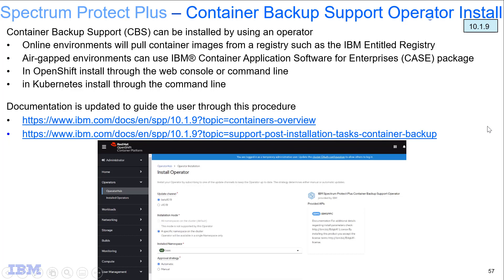Welcome to this demo of IBM Spectrum Protect Plus container backup support via an operator install for Kubernetes and OpenShift environments. Previously, the container backup support install was only supported from the command line or developer Helm view. Now, in version 10.1.9, we can utilize the Red Hat OpenShift install operator to do the installation in an OpenShift environment. In this demo, we'll go through the uninstall if you're doing an upgrade of the 10.1.8 BAS agent — the BAS agent is the same as your IBM Spectrum Protect container backup support — and then the operator-assisted install of the 10.1.9 version in a connected environment, pulling packages directly from an entitled registry.